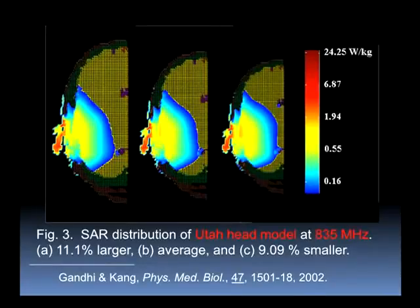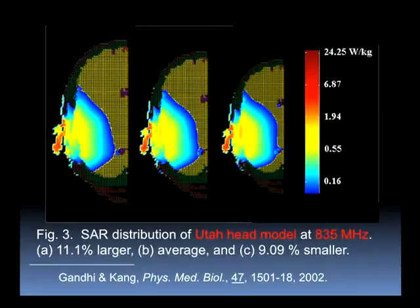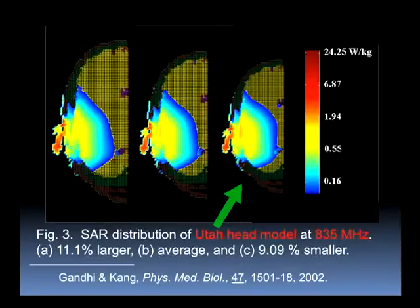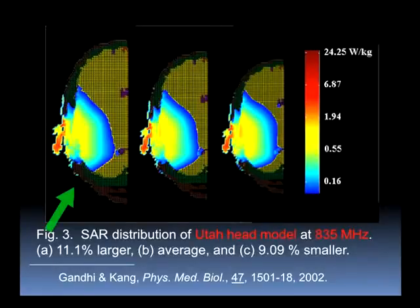This is work done by my distinguished colleague Olle Gandhi. We are about to publish a new paper showing, with very detailed three-dimensional modeling, exactly where radiation exposure is greatest inside the brain of smaller heads. This is the head size of many women, this is the head of less than 3% of the U.S. population, and this is the head size for which all standards are set.